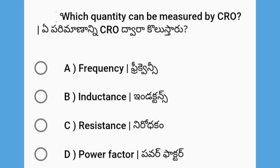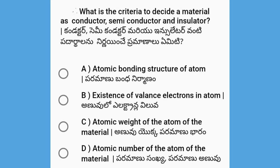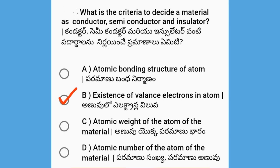Which quantity can be measured by CRO? The options are frequency, inductance, resistance, and power factor. The answer is frequency. Next, what is the criteria to decide a material as conductor, semiconductor, or insulator? The options are atomic bonding, bonding structure of atom, existence of valence electrons in the atom, and atomic weight. The answer is existence of valence electrons in the atom.